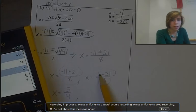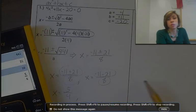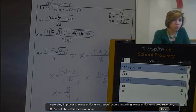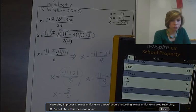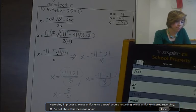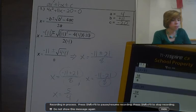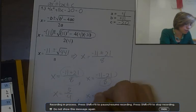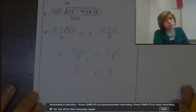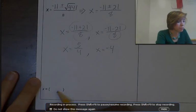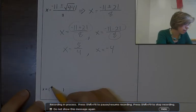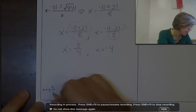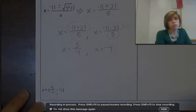Now the second equation: negative 11 minus 21. I can evaluate that — negative 11 minus 21 gives me negative 32, then divide by 8, which is negative 4. So x equals negative 4. In the solutions bracket, my two solutions are 5 over 4 and negative 4.